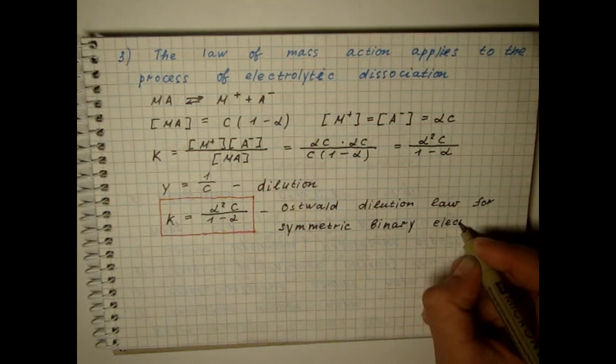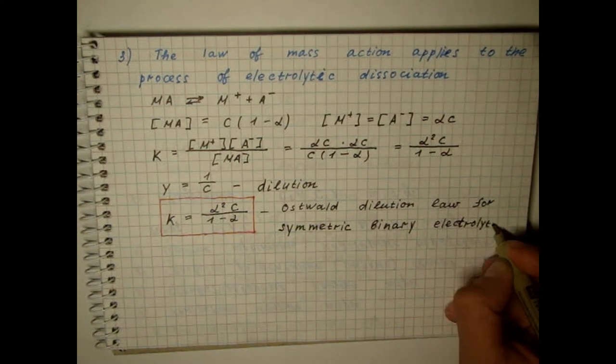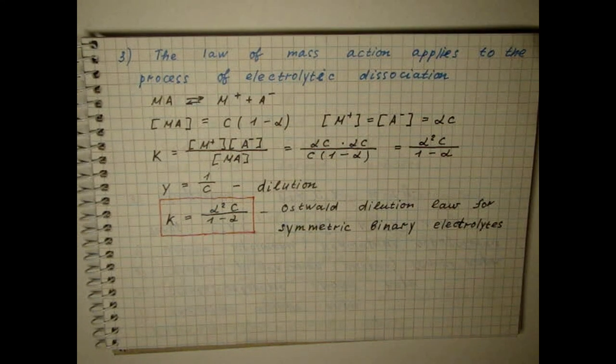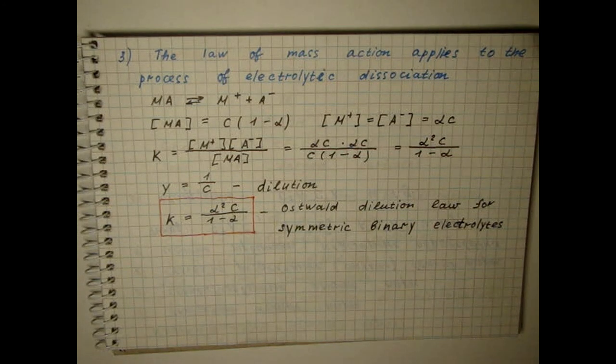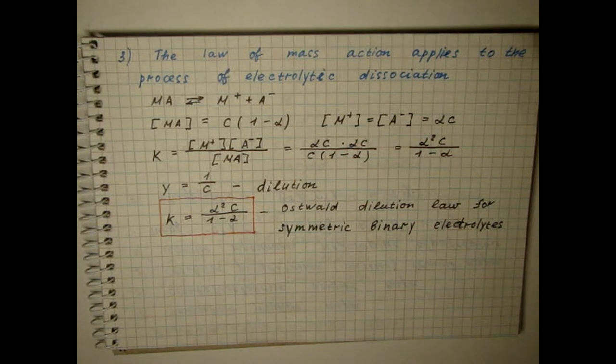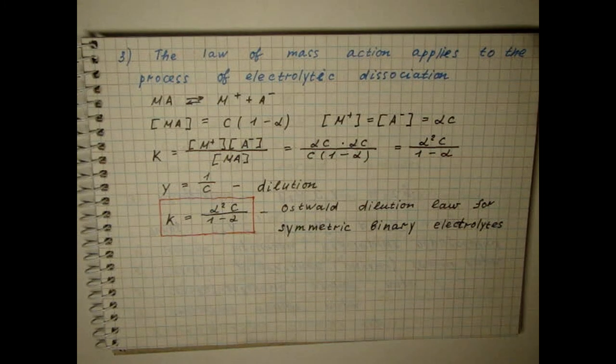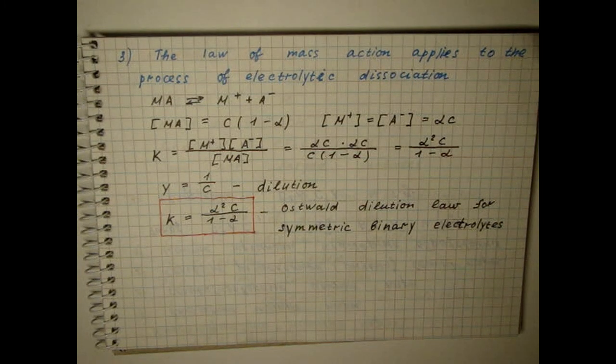In the case of other electrolytes, the equation describing the law of mass action becomes more complicated. Arrhenius theory allowed to interpret all the phenomena associated with the ion balance and served as the basis for qualitative and quantitative analysis.